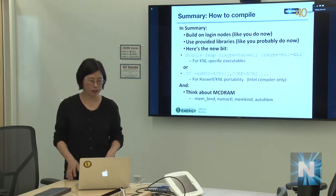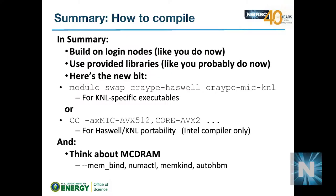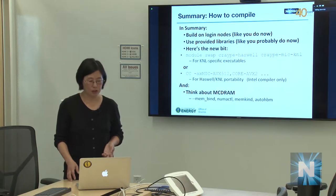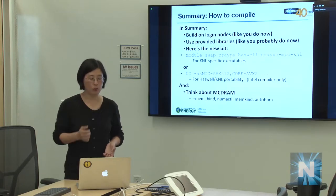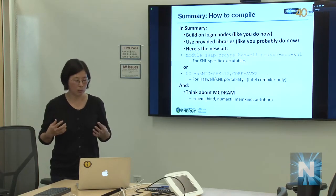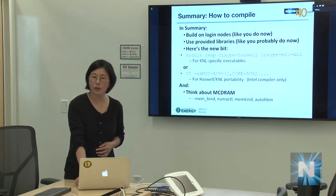Summary of compiling: build on login nodes as you do now, and use provided libraries. The key takeaway is 'module swap craype-haswell craype-mic-knl' — that's the easiest way to build for KNL. Alternatively, for Intel compiler only, you can use the -ax flag to target both architectures. Keep MCDRAM usage in mind.